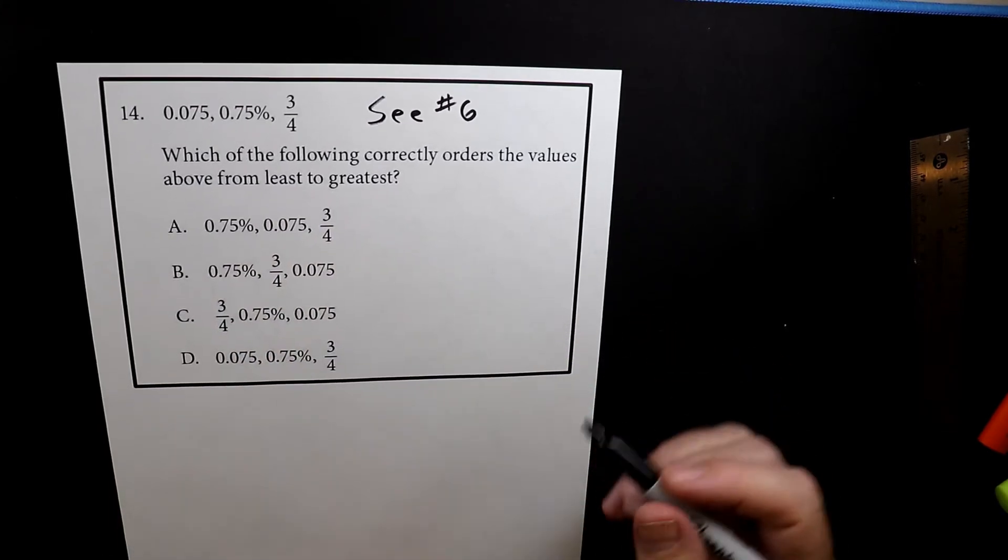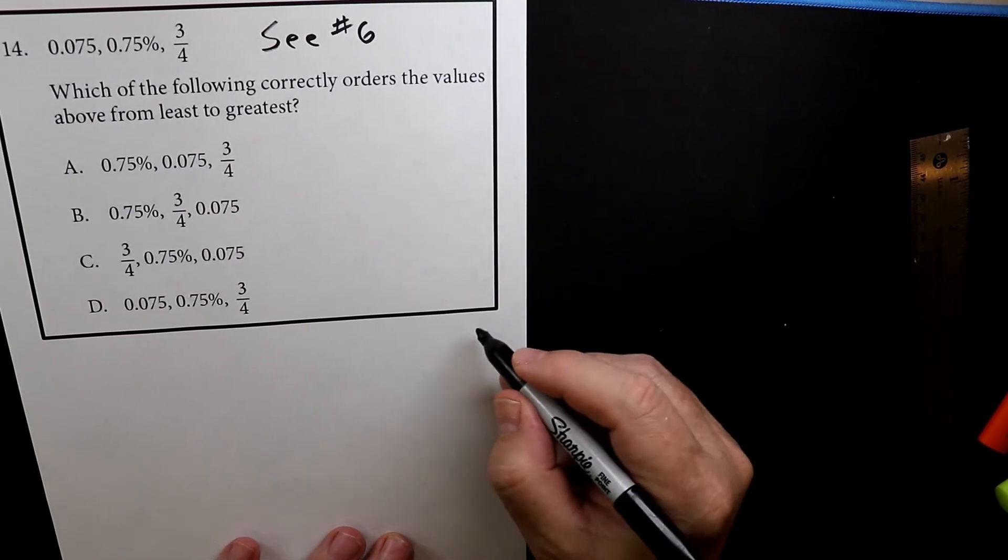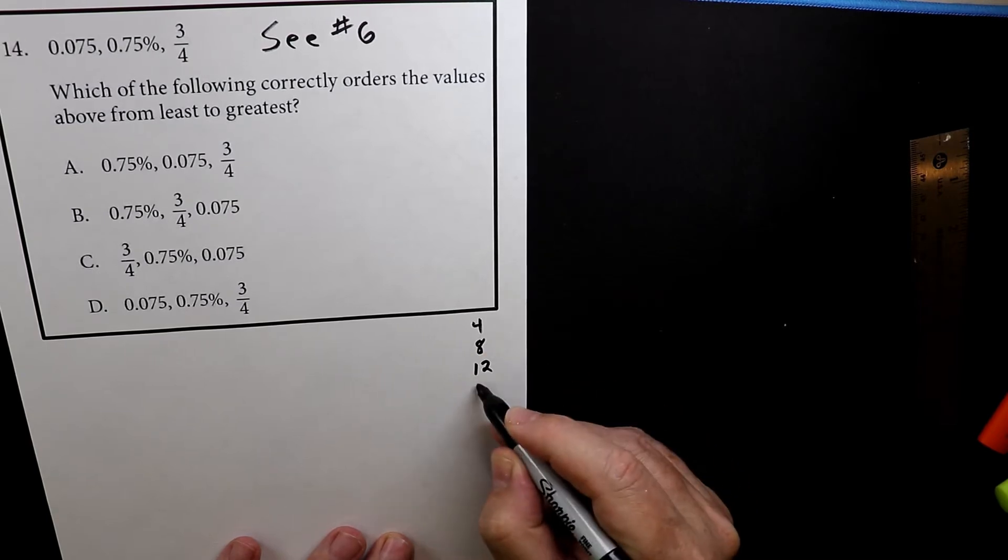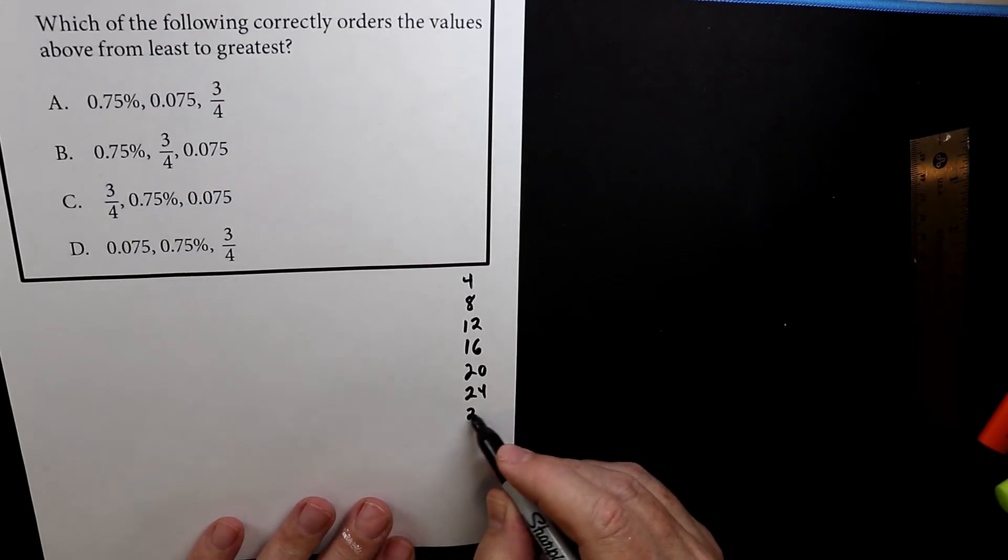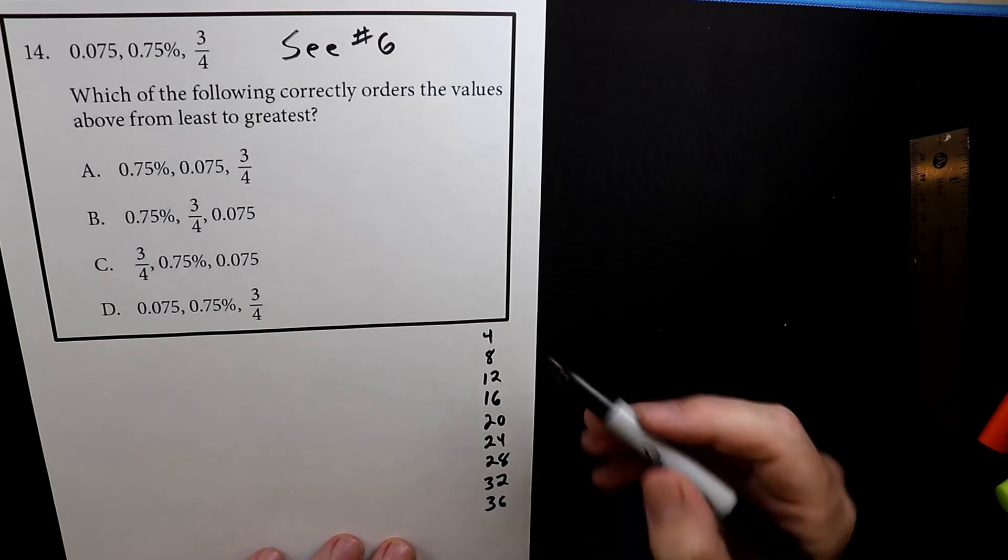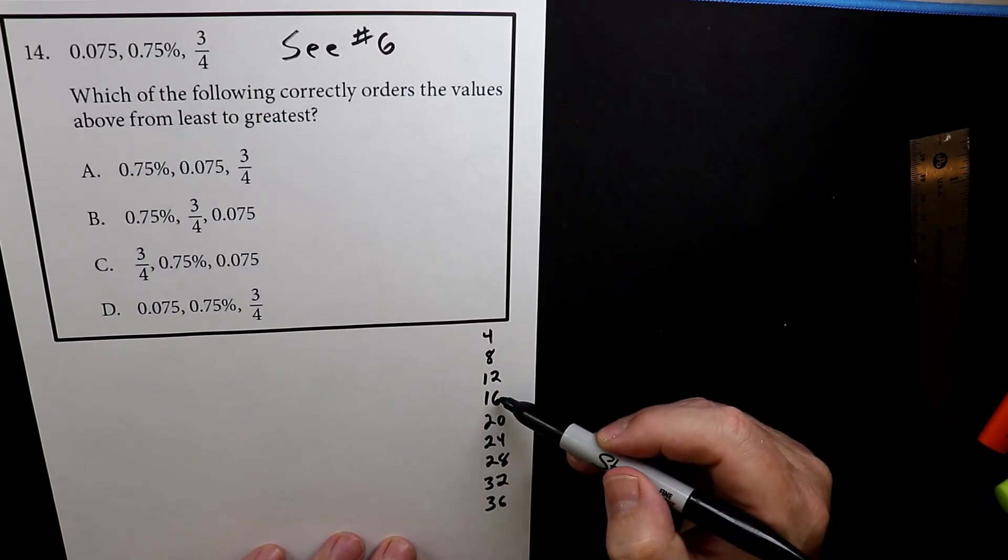So I'm going to put down over here just so we have it handy the four times tables. So we have 4, 8, 12, 16, 20, 24, 28, 32, and 36. So that's 4 times 1, 4 times 2, 4 times 3, 4 times 4, etc.